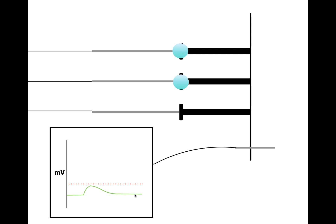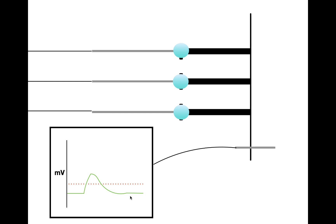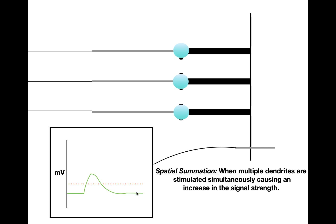What if we stimulate all three simultaneously? If we stimulate all three at once, we see that the cell depolarizes to an even further level and then comes back down to the resting potential. This is called spatial summation — when you stimulate multiple dendrites simultaneously, all of these signals have an additive effect, causing an increase in the signal strength.